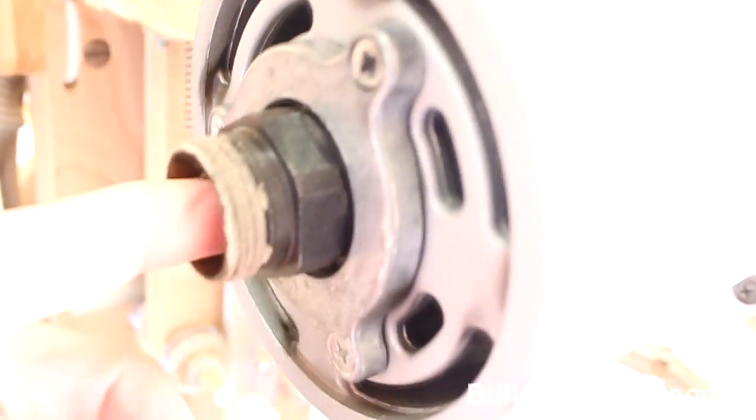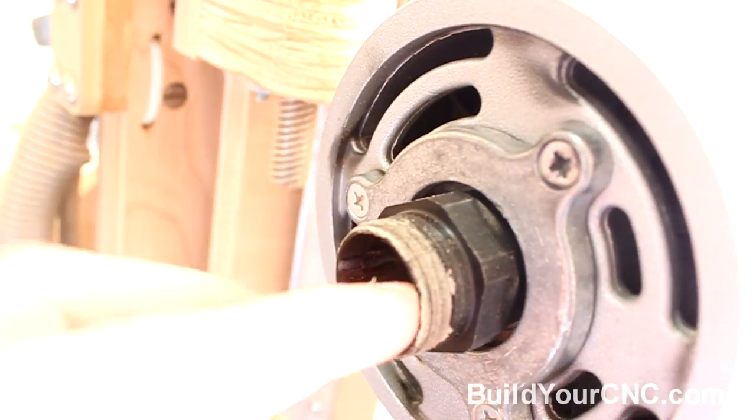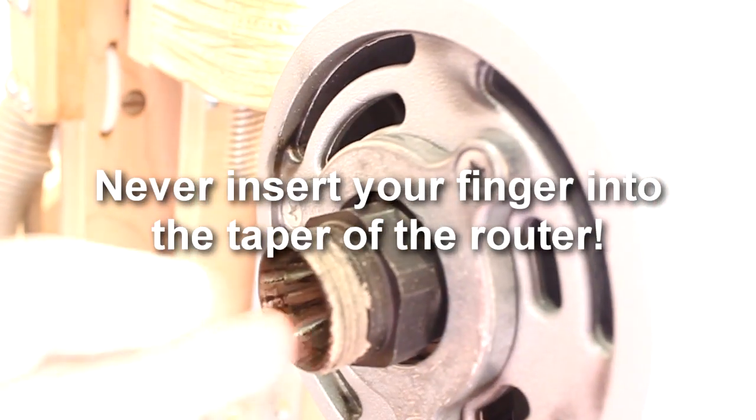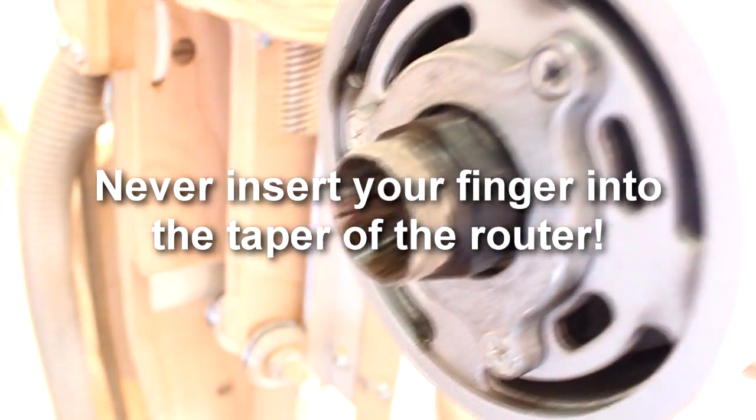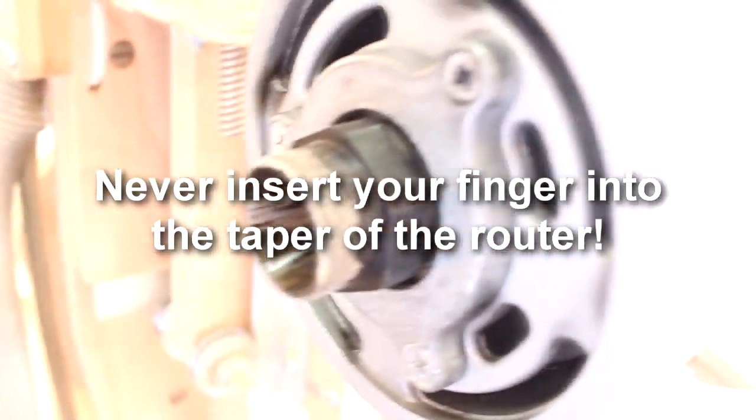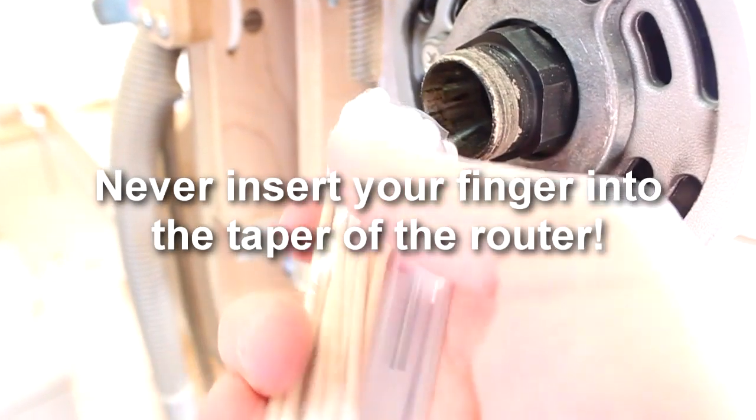This is the taper of the router and what we're going to do is take some cleaner and clean the inside of this taper. We're also going to turn the router on at the same time while we're doing this. We're going to be using these q-tips here and this cleaning solution.